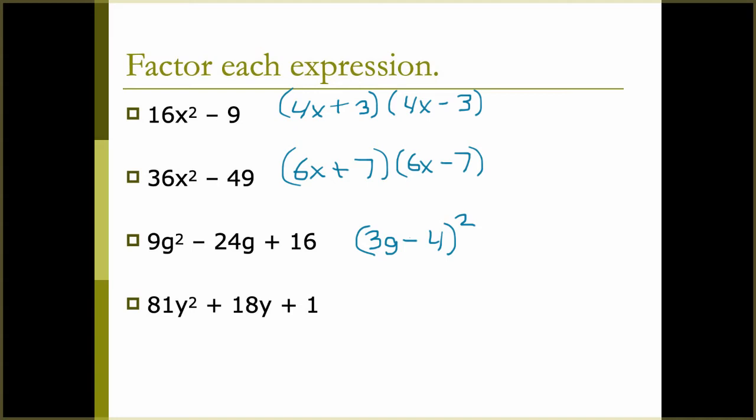Last one. Look for a GCF — there isn't one. We have a perfect square in 81y² and a perfect square in 1. Take the square root of the first and the square root of the last, and match the sign of the middle — it's a binomial square. To verify, multiply 9y times 1 to get 9y; doubled, that's 18y, which matches the middle term.